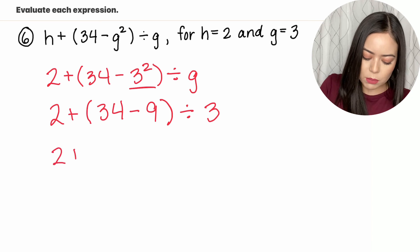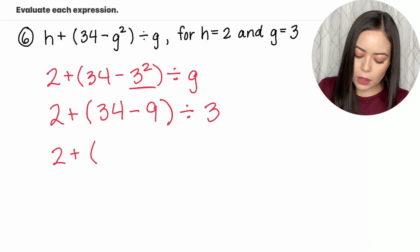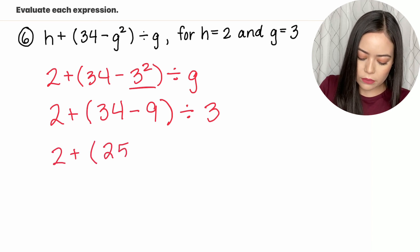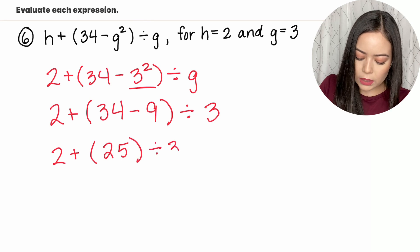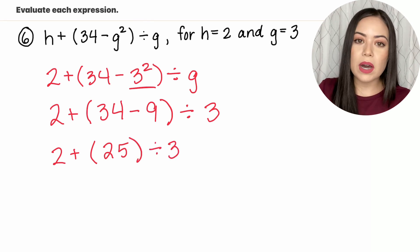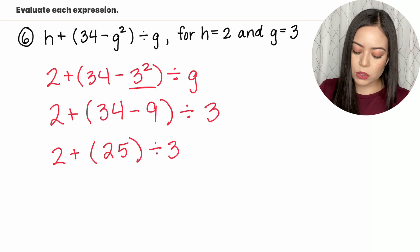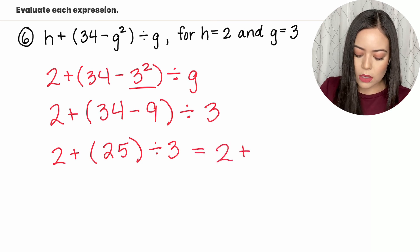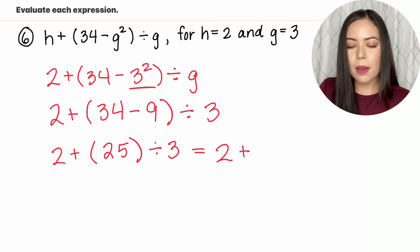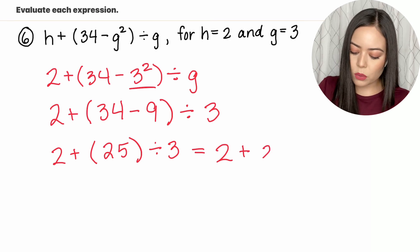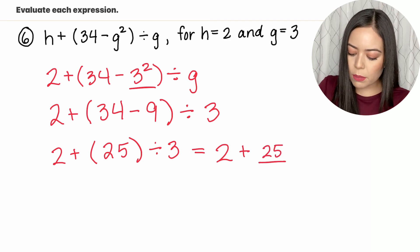Now let's continue to simplify what's in the parentheses. 34 minus 9 is 25 divided by 3. Now we have to divide but we are going to get a fraction but don't be afraid of that. We have 2 plus, so 25 divided by 3 can be rewritten as this: 25 divided by 3.